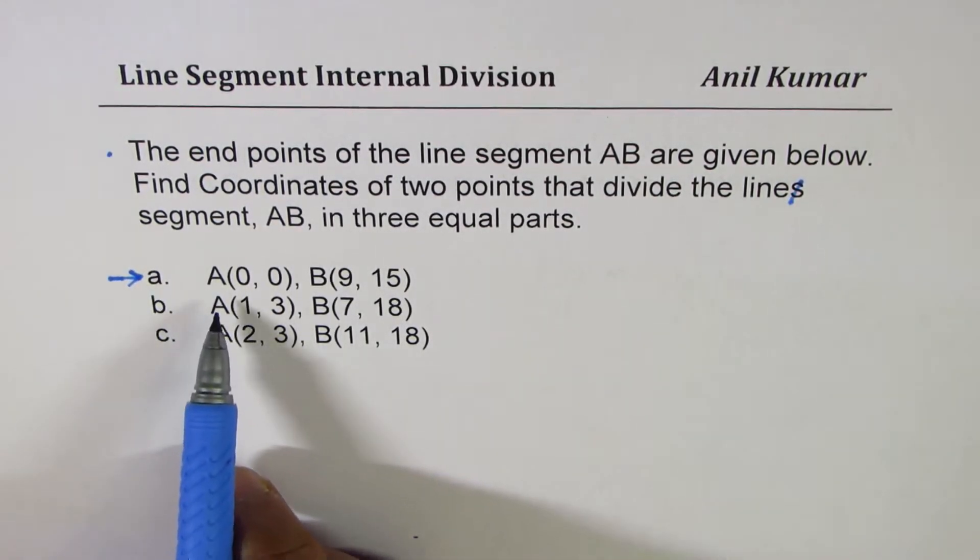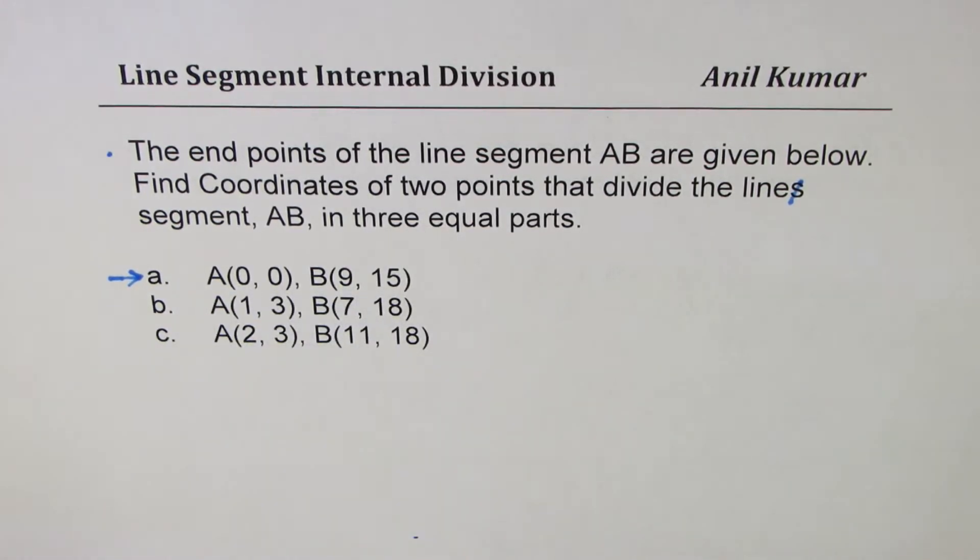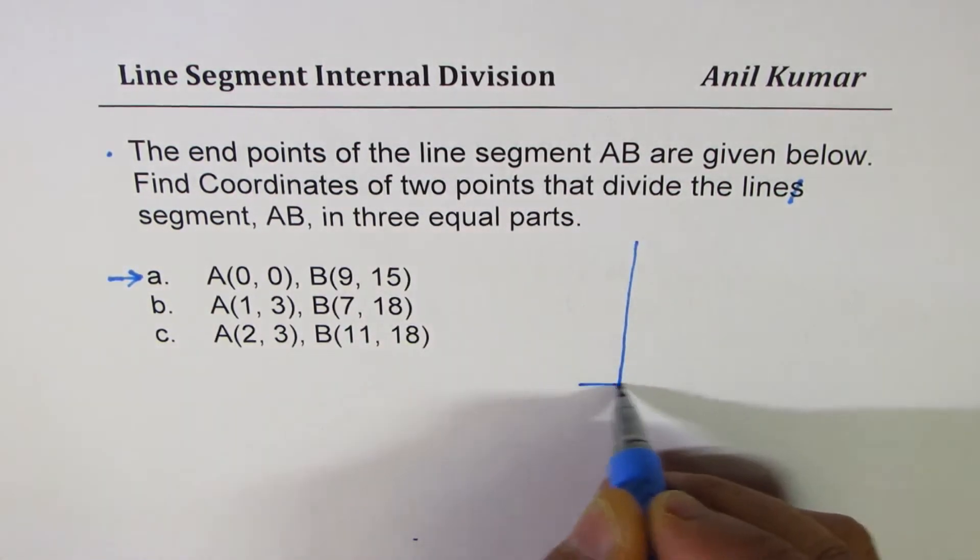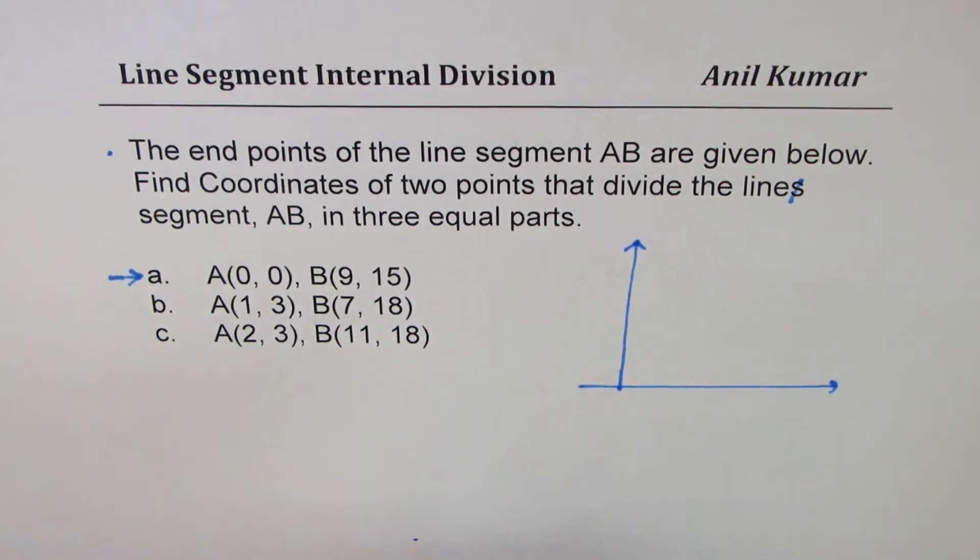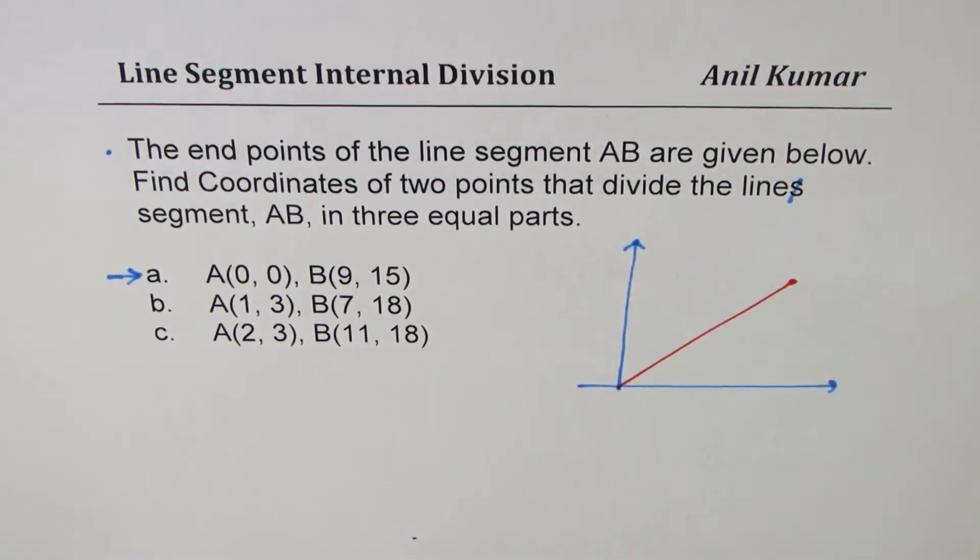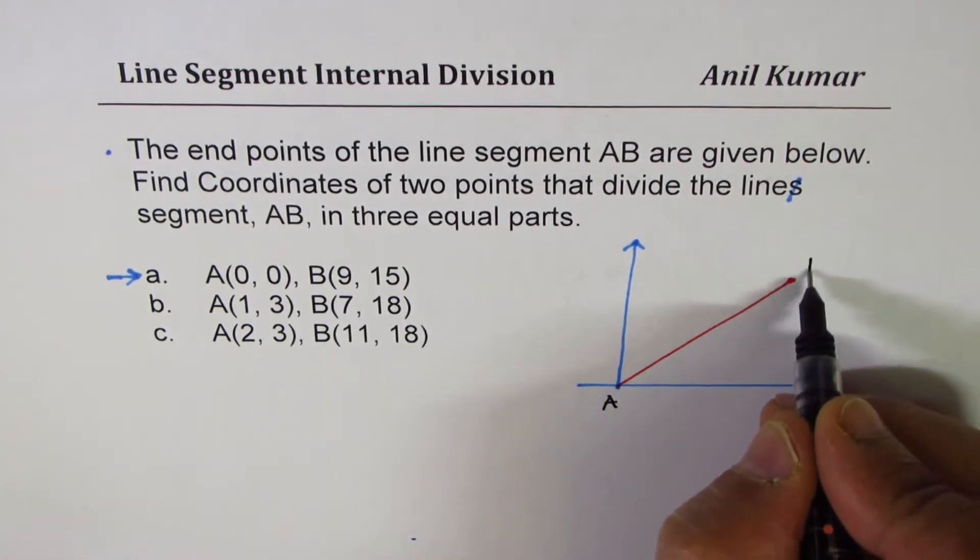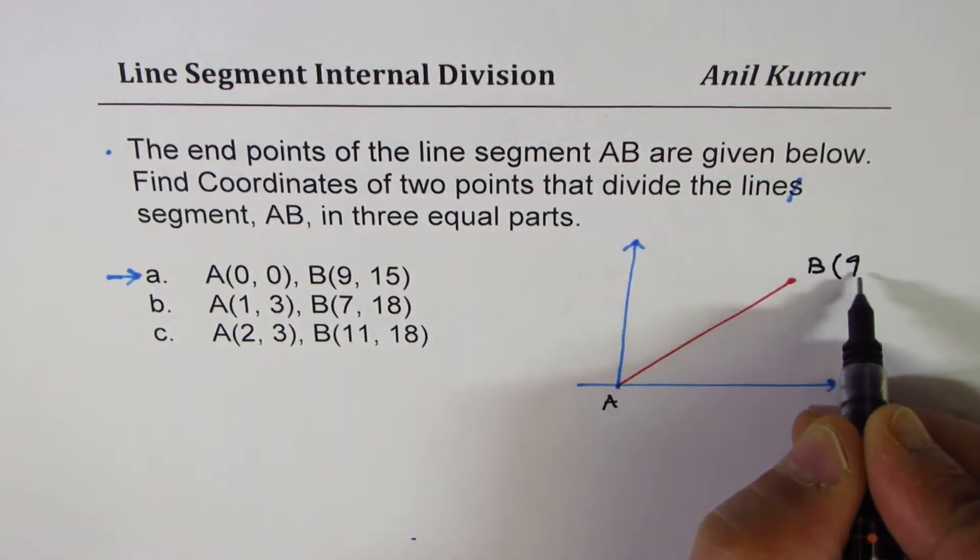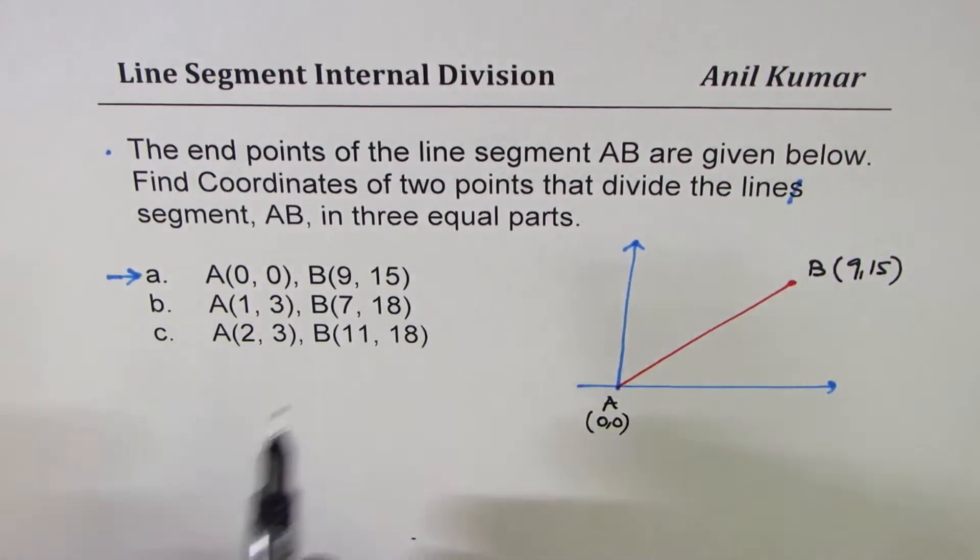Let me consider the first one, where coordinates of point A is 0, 0 and B is 9, 15. Let's sketch and understand the situation. Let's say that is x, y plane. Point A is at the origin. Let me make a figure where we have point A at the origin, which is 0, 0. A and B are these two points. B is 9, 15 and A is 0, 0.